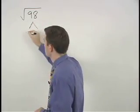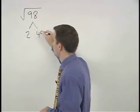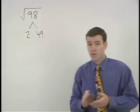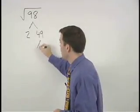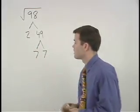98 is 2 times 49, and if you know your perfect squares you'll recognize 49 as 7 times 7.